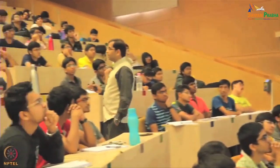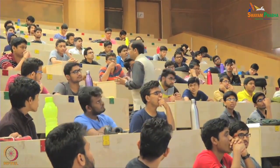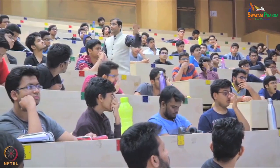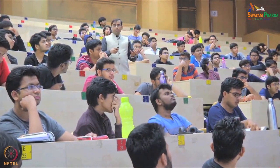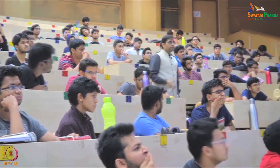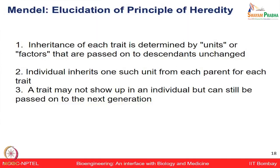Many people say Mendel was lucky because in the pea plant he was able to get different allelic forms for the same gene with many contrasting properties, which is not usually present in many other plants or animal systems. He randomly selected the pea plant as an experimental system, and all his experiments became very reproducible. These characteristic variants are called traits. Inheritance of each trait is determined by units or factors — now known as genes — which remain unchanged as they pass to descendants.